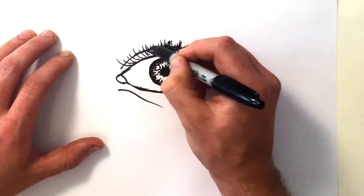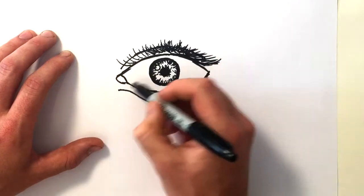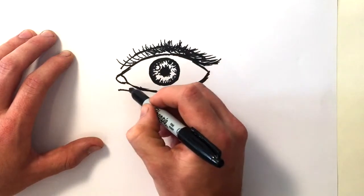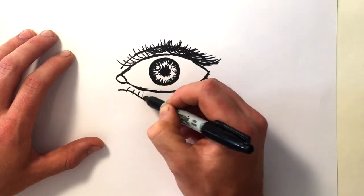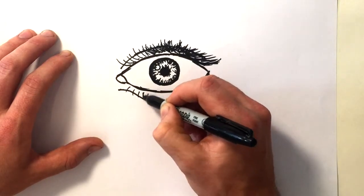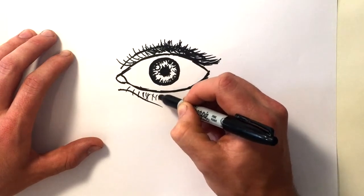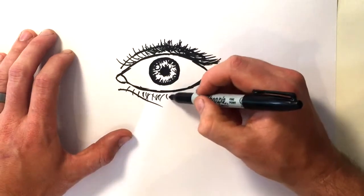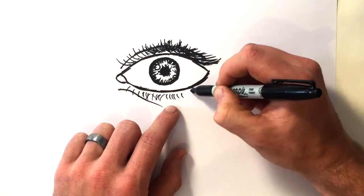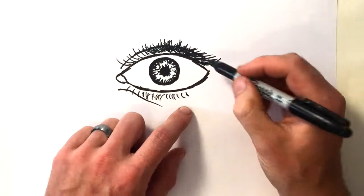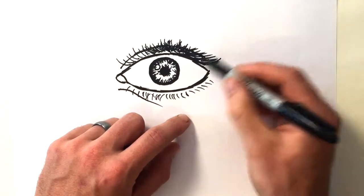Very simple. And then the ones on the bottom eyelid are usually thinner and smaller than the top. Just little ones. And sometimes they cross over. See like that. Just doing little curved lines. Like they're kind of like brackets or skinny letter C's or something. And you go. Keep going. All the way up like that.